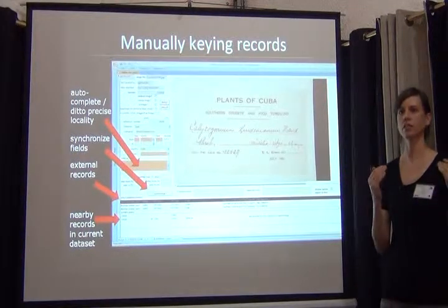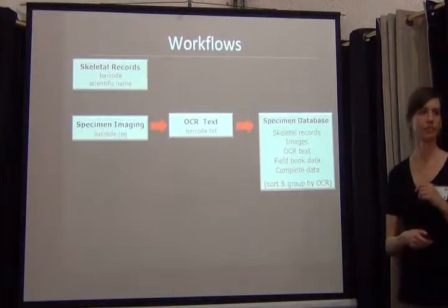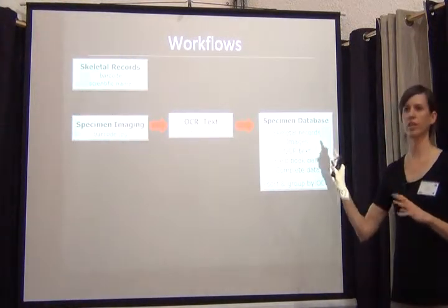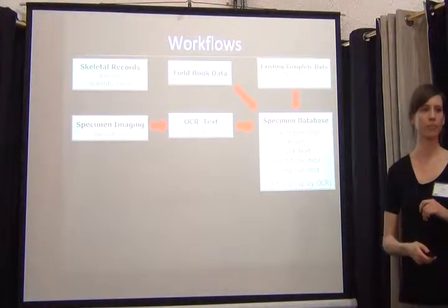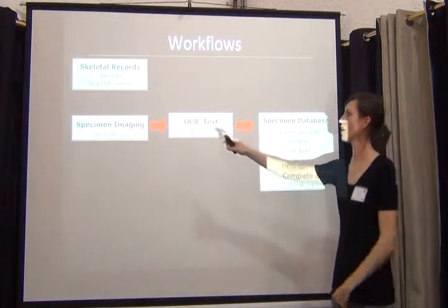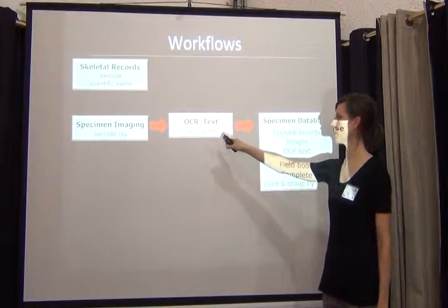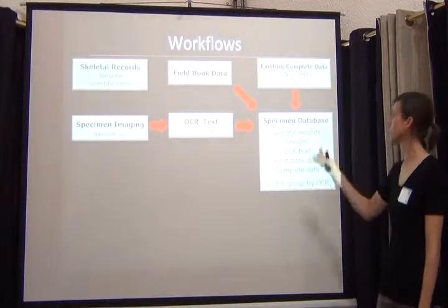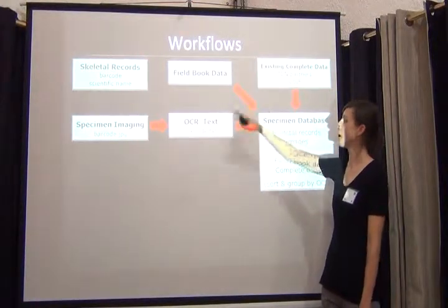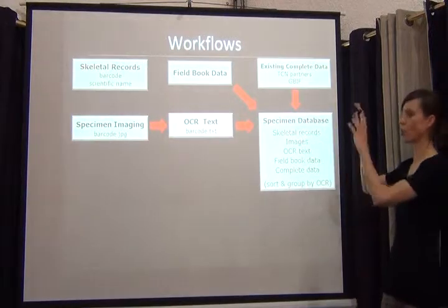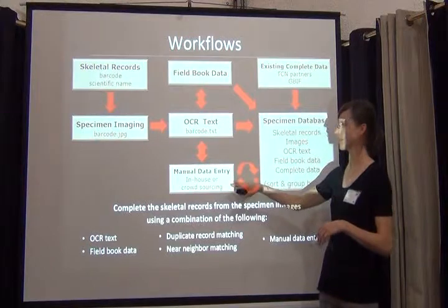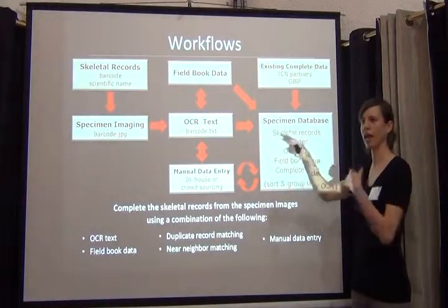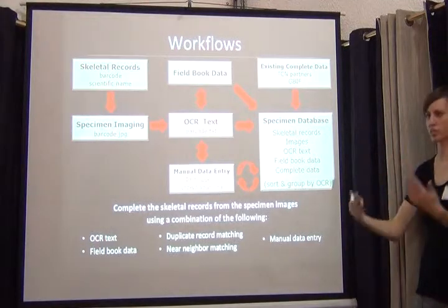So all you'd have to fund up front is just creating skeletal records and imaging specimens. We'll cover workflows much more carefully tomorrow. To summarize: we start with skeletal record creation and specimen imaging; the images go to create OCR text, and that all gets into a main specimen database. In that database we may already have existing complete records and field book data. We combine the OCR text with all of that information, sort and group the records, and then do some manual in-house data entry or crowdsourcing. We get more existing complete records, find more duplicates, and keep feeding more information into this database, hoping it continually speeds up data entry.